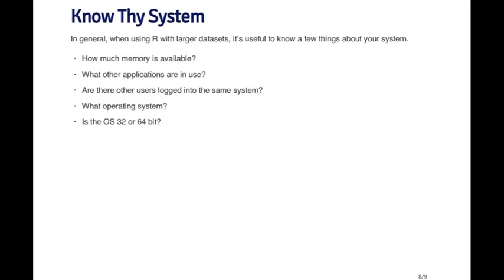In general, when you're using R with large datasets, and there's lots of large data sets out there nowadays, it's useful to have a few bits of information on hand. For example, how much memory does your computer have? How much physical RAM is there? These days, most computers will have on the order of a few gigabytes up to many gigabytes of physical RAM. What other applications are in use? Are there other applications running on your computer that may be eating up some processor time or memory? If you're on a multi-user system, are there other users logged into the system using up some of the resources? What is the operating system for your computer—Mac, Windows, Unix, Linux? And also it's useful to know whether the operating system you're running is 32-bit or 64-bit. On a 64-bit system, you'll generally be able to access more memory if the computer has a lot more memory.